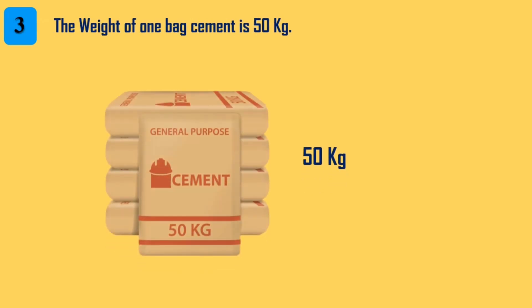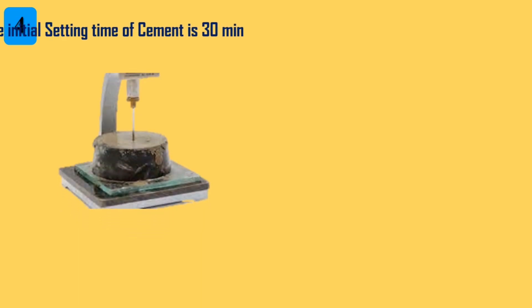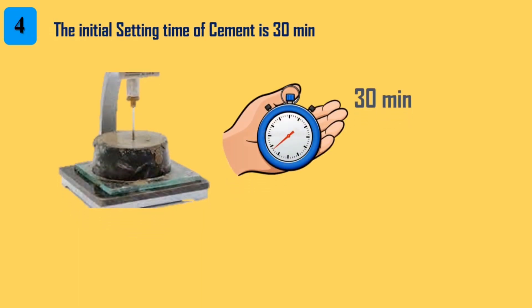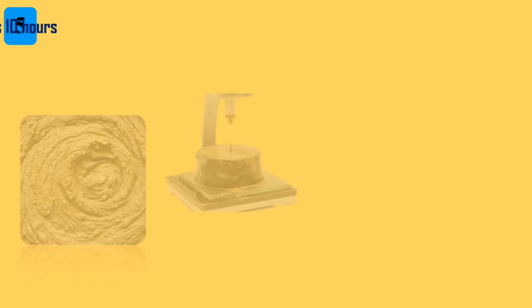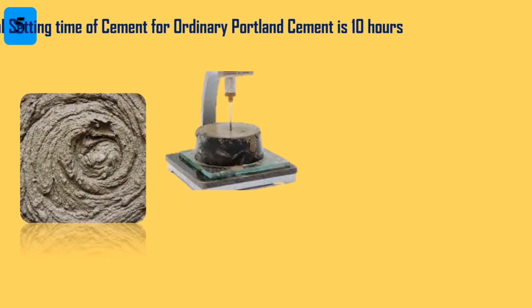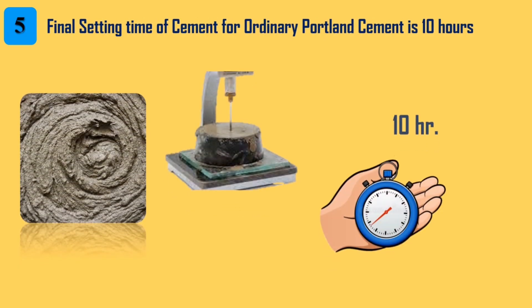3. The weight of one bag of cement is 50 kg. 4. The initial setting time of cement is 30 minutes. 5. The final setting time of cement for ordinary Portland cement is 10 hours.